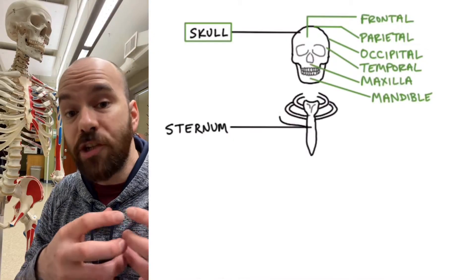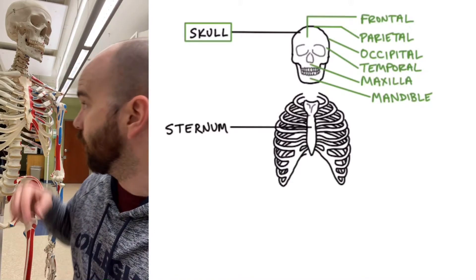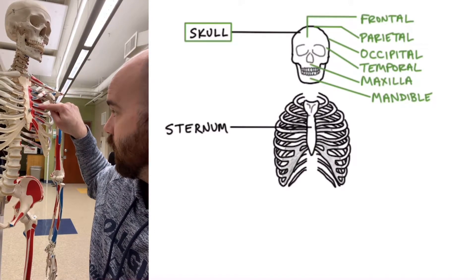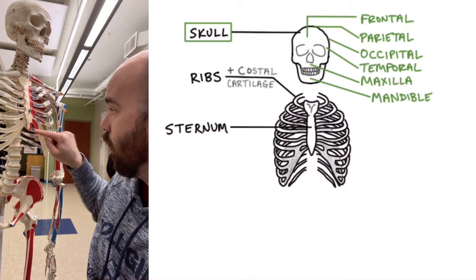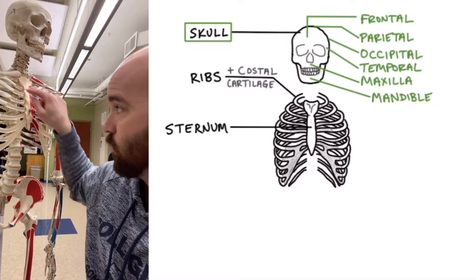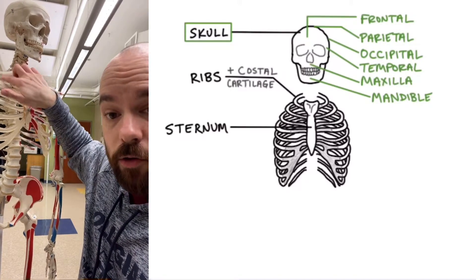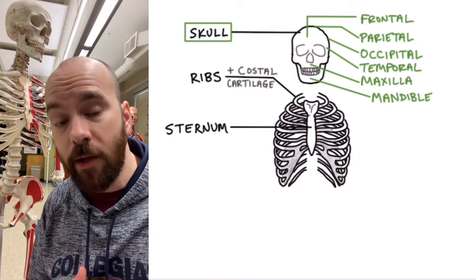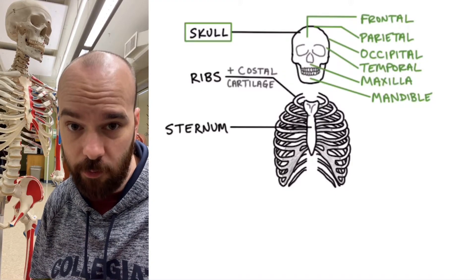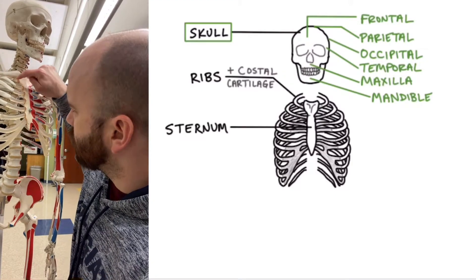Now branching out of your sternum are a bunch of pieces of cartilage. We call those the costal cartilage, and they connect your sternum to your ribs right here. As far as your ribs go, you've got 12 pairs of ribs. If I count in the front though, I won't count 12, so I'm going to spin around to the back so we can see all of those ribs.